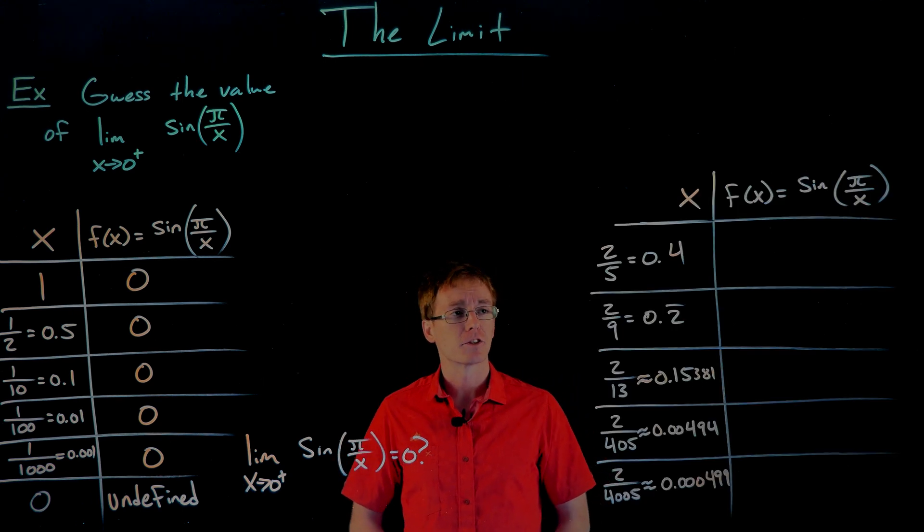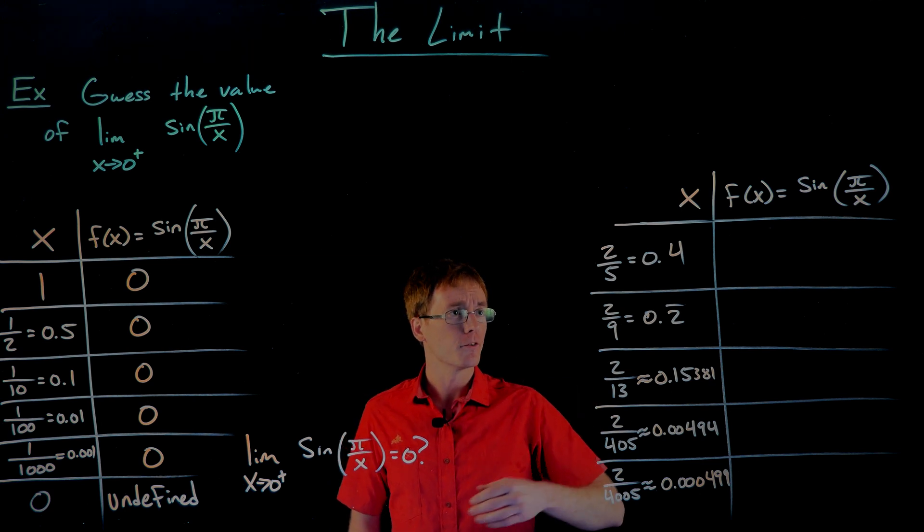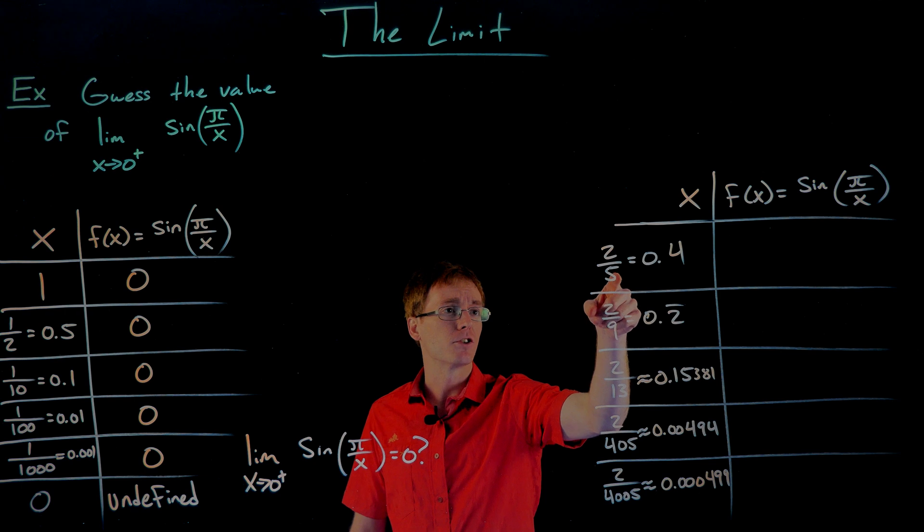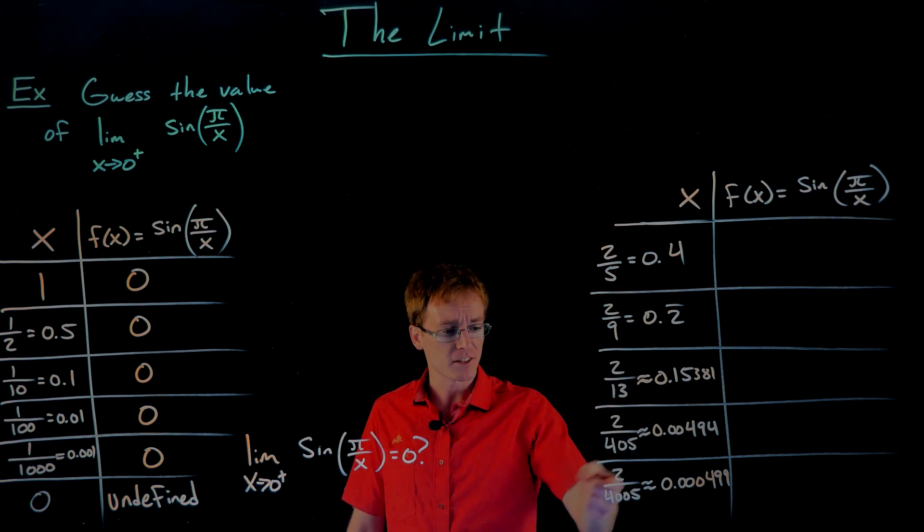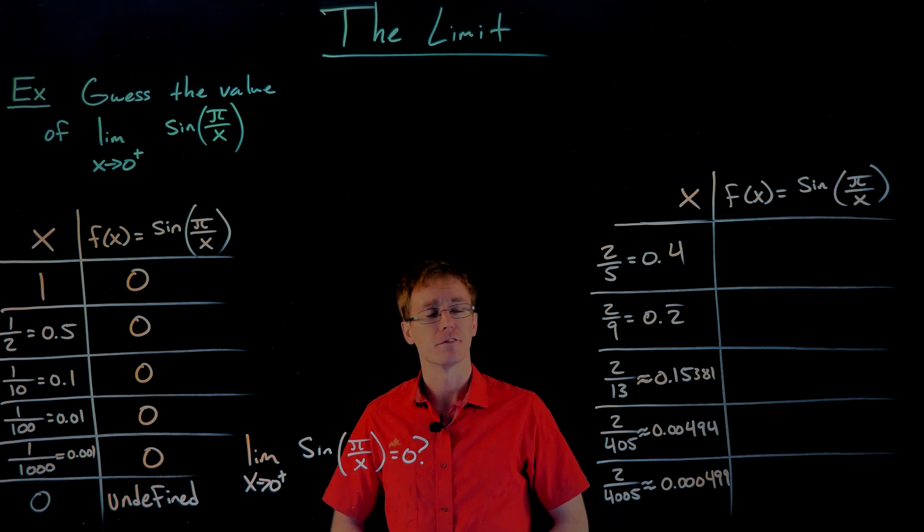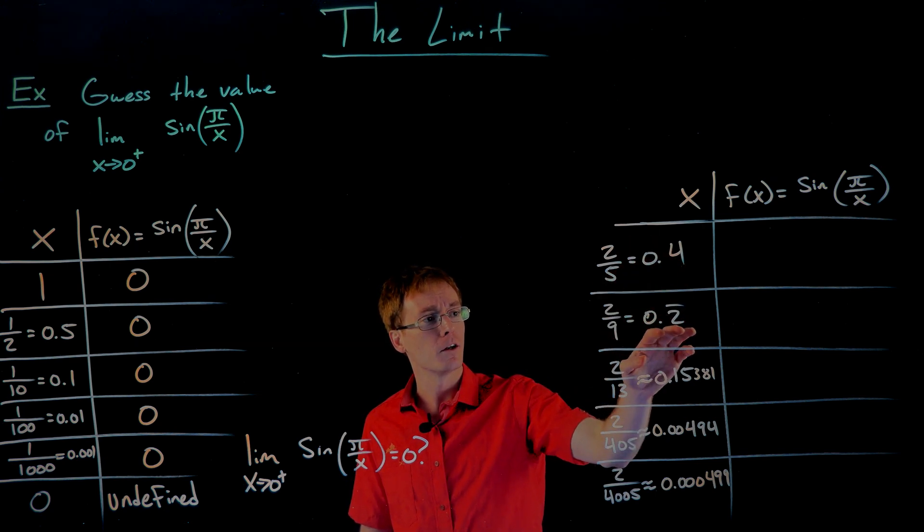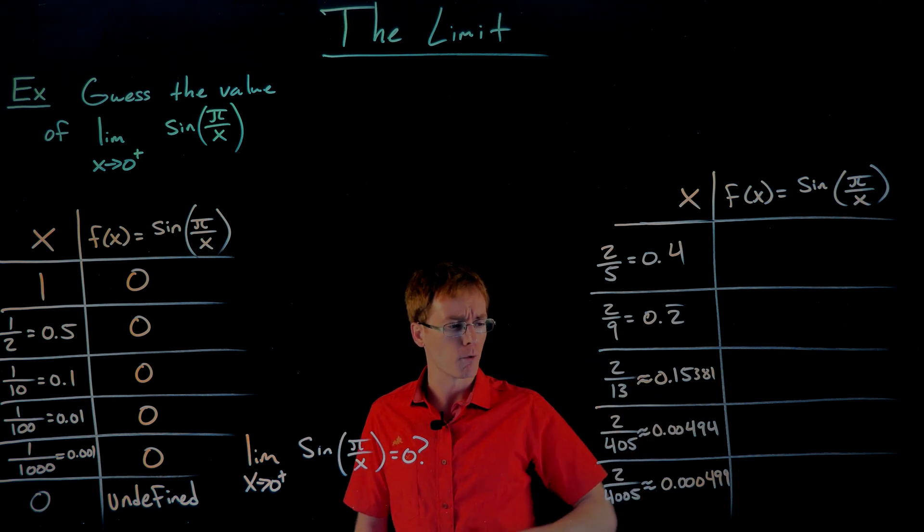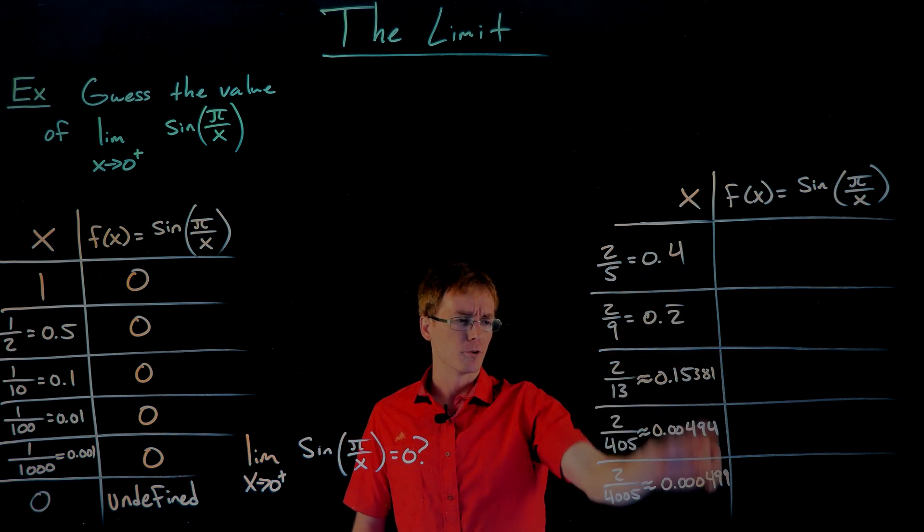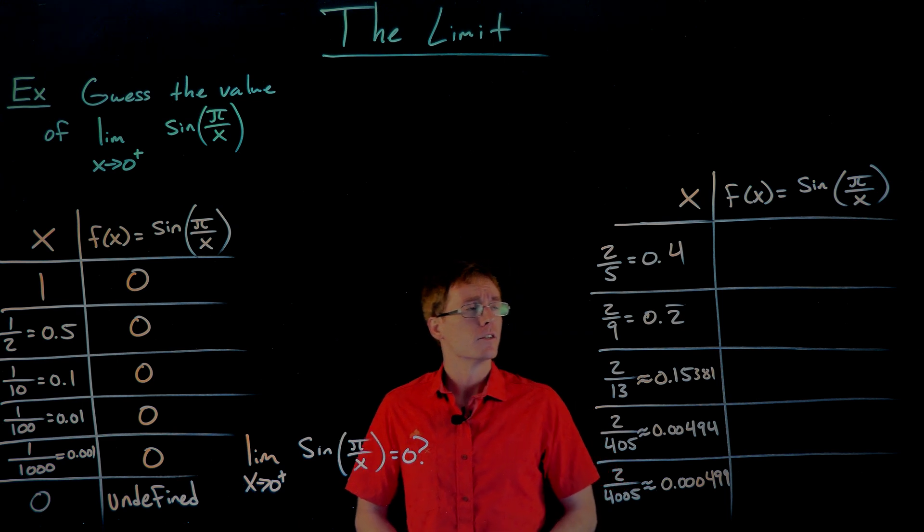I have our next sequence of x values up on the board over here. And so this time we're approaching zero still from the right. We're going to go through the sequence of x values starting at two fifths, then two ninths, two thirteenths, two four hundred and fifths, and then two four thousand and fifths. And if we look at the kind of decimal representations of these fractions, we're going from 0.4, 0.2 repeating about 0.15381, 0.00494, 0.00499. Looking at the decimals over here is just to reassure us that we are actually getting closer and closer to zero. So let's see.